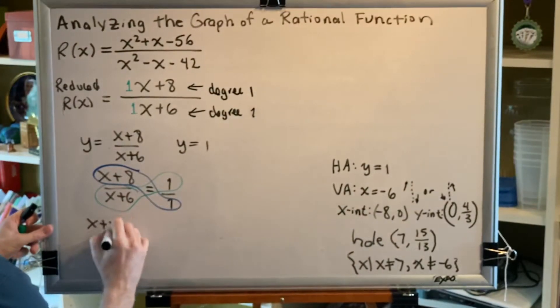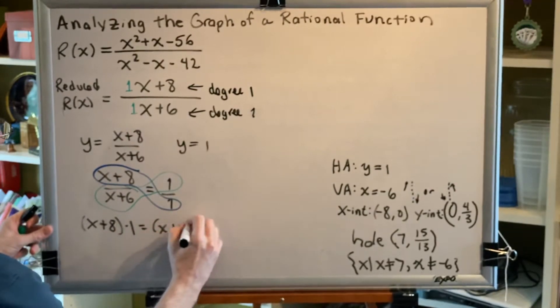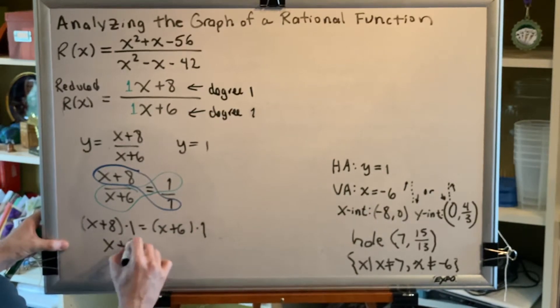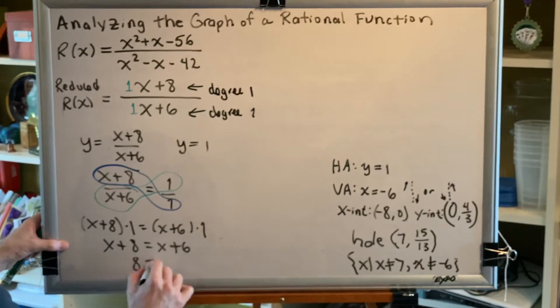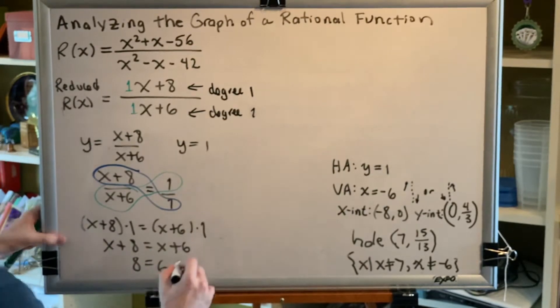So we get x plus 8 times 1 equals x plus 6 times 1. Anything times 1 is itself, so we get x plus 8 equals x plus 6. And subtracting x on both sides, we get 8 equals 6, which is false.